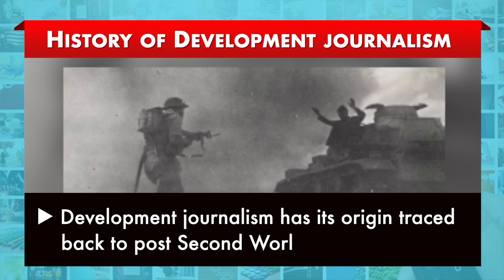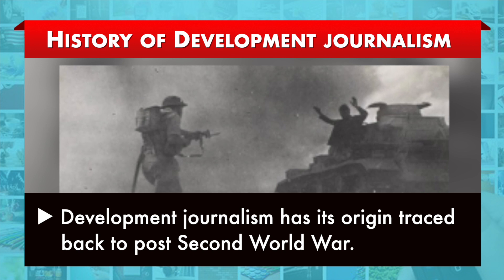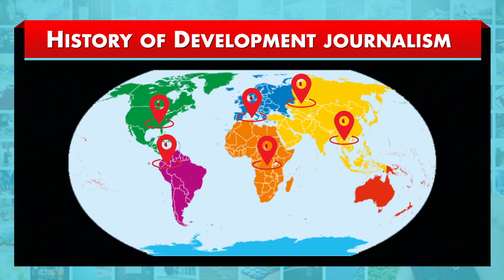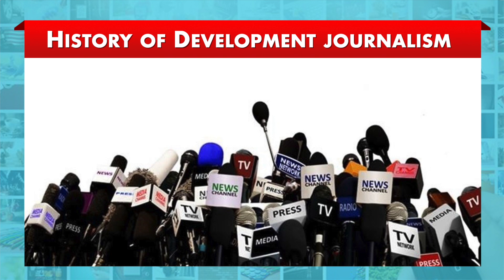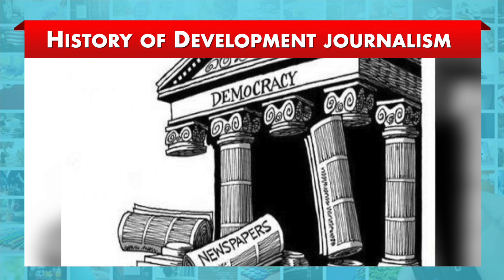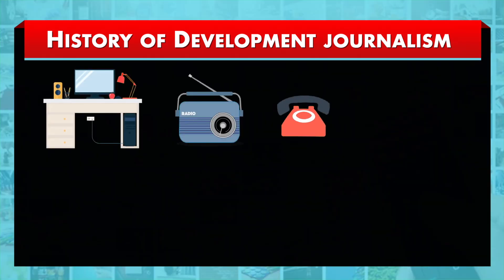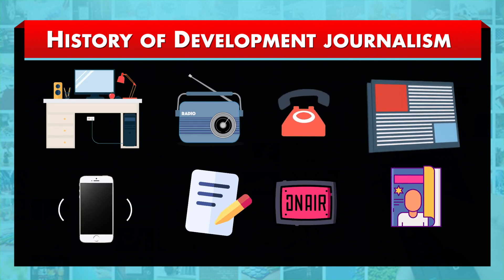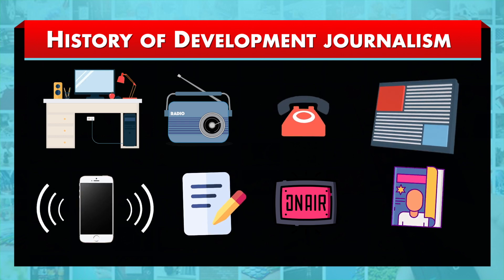Development journalism has its origins traced back to post-Second World War, when development communication started taking its roots in the developing countries of Asia, Latin America and Africa, as these countries started formulating their policies of development. Since the media would play a key role in national development, rulers were expected to utilize media services in disseminating information to the people. When policies were taking shape, neither the government nor newspapers realized the importance of the press in national development. However, when the theory of development media gained importance, experts identified the role of the press in nation building.